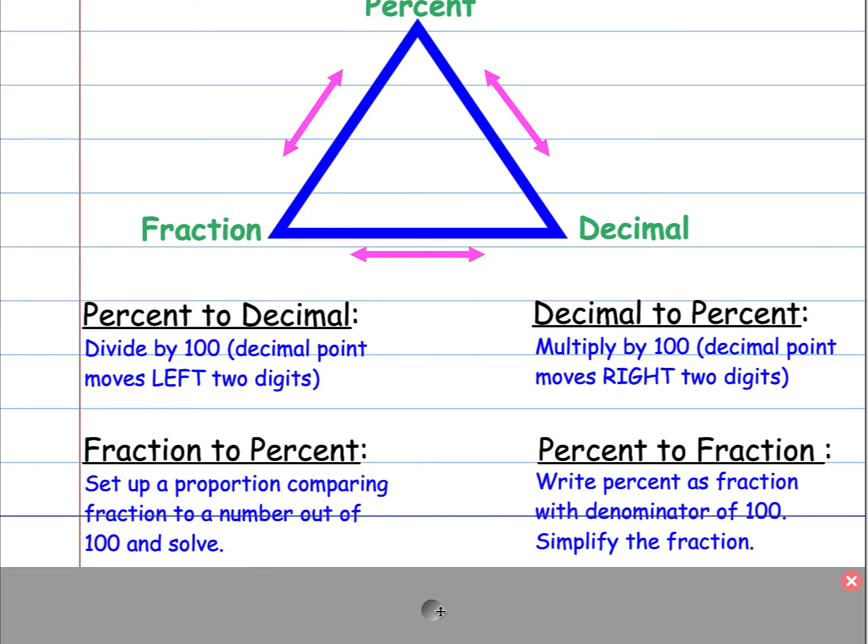So if I'm converting from a fraction to a percent, I set up a proportion comparing the fraction to a number out of 100, and solve for the percent. When I'm going from a percent to a fraction, I write the percent as a fraction with a denominator of 100, and I simplify the fraction.